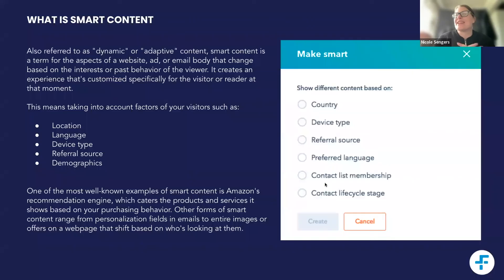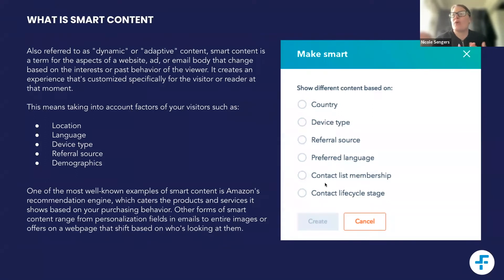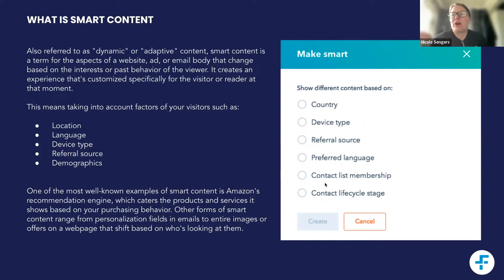We'll start with the most basic: what exactly is smart content? HubSpot coined the term smart content, but most other businesses or tools call it dynamic or adaptive content. It's a term for where you have different content on an email, a website, or an ad based on the interest or past behavior of the person viewing it. It creates a personalized experience for the visitor or reader at that moment.